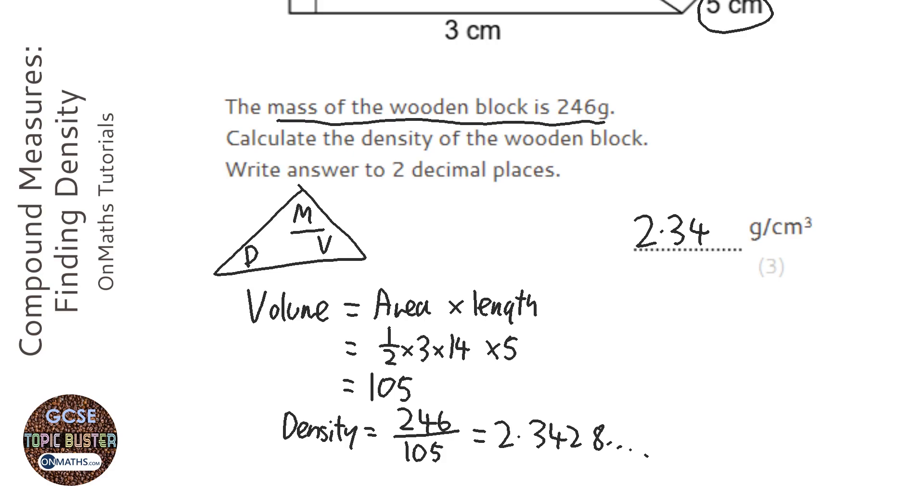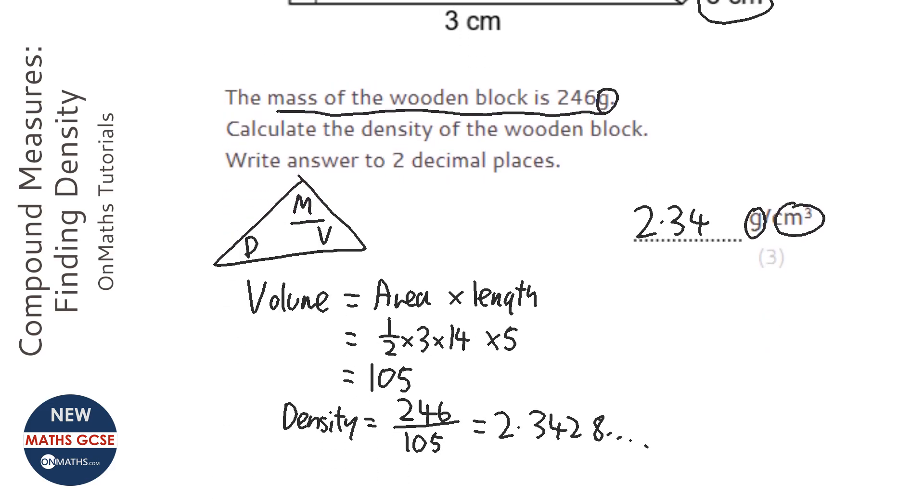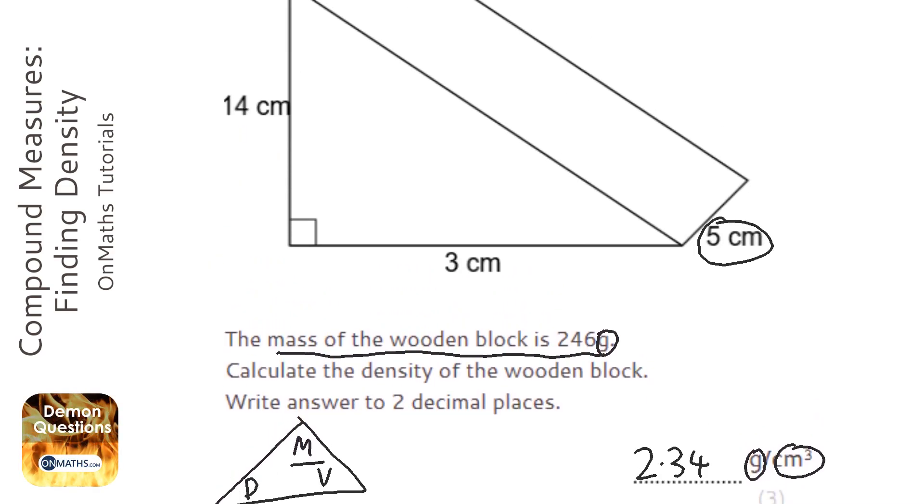2.34 grams per centimeters cubed. The grams is the unit of mass given in the question, and centimeters cubed is the volume because all the units were centimeters. And that's it.